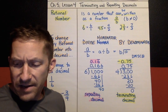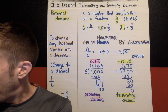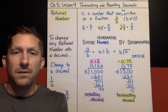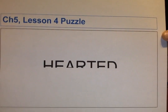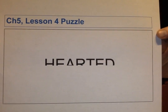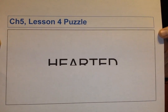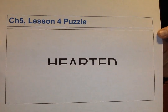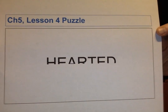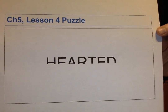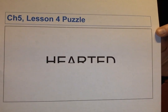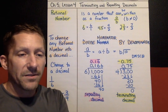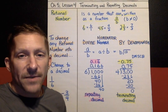Before we wrap up, here is the hidden treasure for Lesson 4 — it's this puzzle. To win, you have to solve the puzzle and also have all chapter notes and the Lesson 4 assignment completed when I draw names. That wraps it up for Lesson 4. I will see you again soon for Chapter 5 Lesson 5.